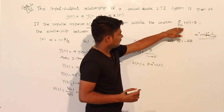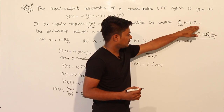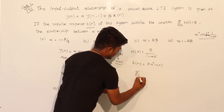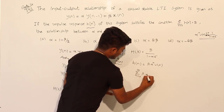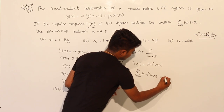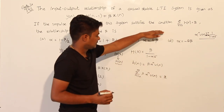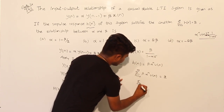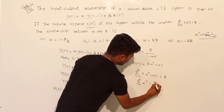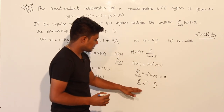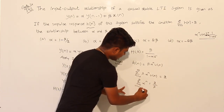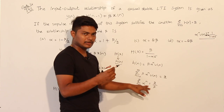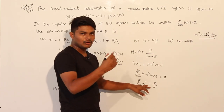Given that the summation from n=0 to infinity of h(n) = 2, apply it here: summation from n=0 to infinity of β·α^n·u(n) = 2. Therefore summation from n=0 to infinity of α^n = 2/β. Expanding this, it becomes α⁰ + α¹ + α² + α³ + ... to infinity — this is an infinite geometric progression.